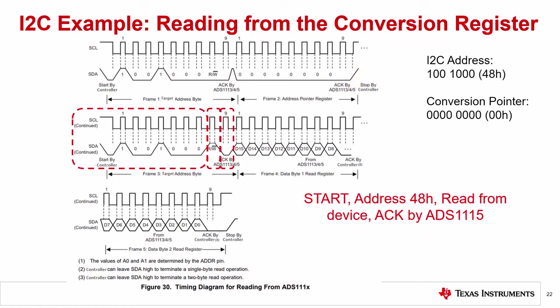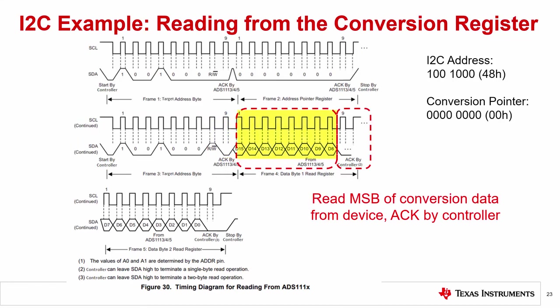Now that we've told the device we want to access the conversion register, we follow up with the read from the conversion register. We write the I2C address again. Now, we need a read from the device from the conversion register of the ADS-1115. At this point, the read-write bit is then set high, indicating that we now want to read from the device. Again, after the completion of the address frame, the ADS-1115 should acknowledge the address.